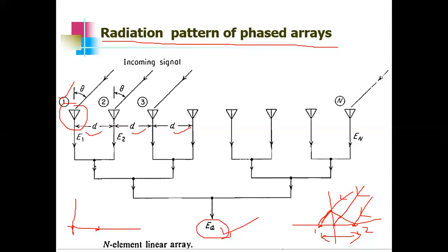When the reference is at the center of two antennas, the extra distance traveled to each antenna is d/2. But in our current case, antenna number one itself is the reference and has zero phase. We assume the incoming signals arrive at an angle theta with respect to the normal of the antenna array.